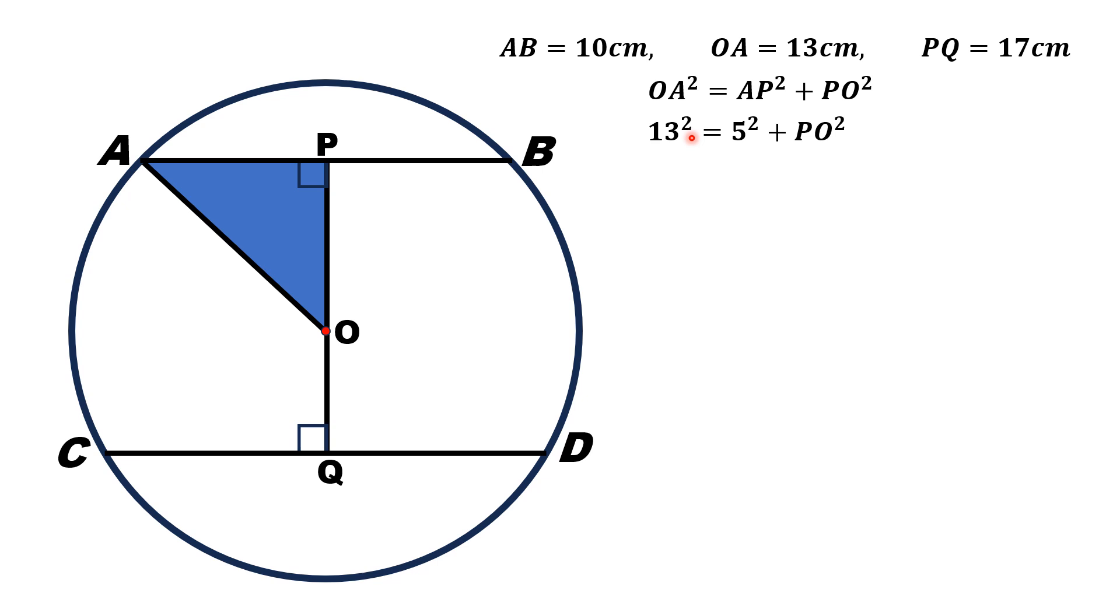Substituting these values, OA is 13 and AP is 5. PO squared will be 169 minus 25, that is 144. If we take square root on both sides, we will get PO is equal to 12 cm.